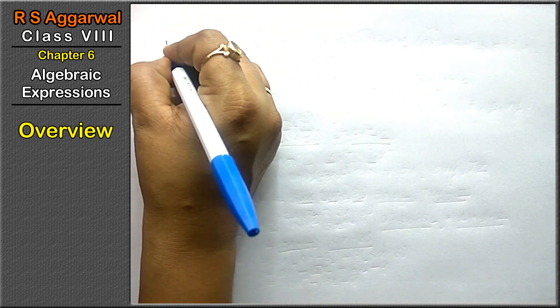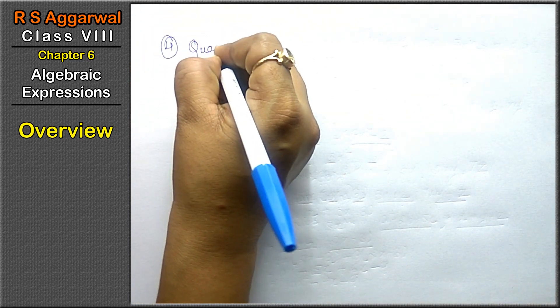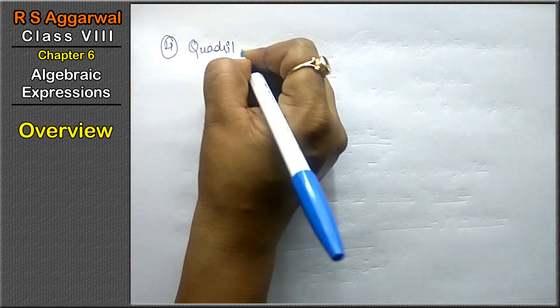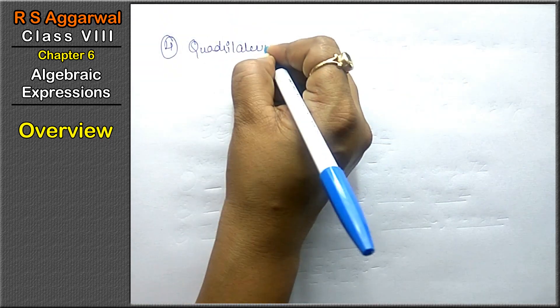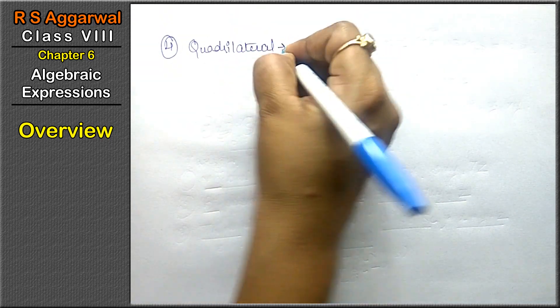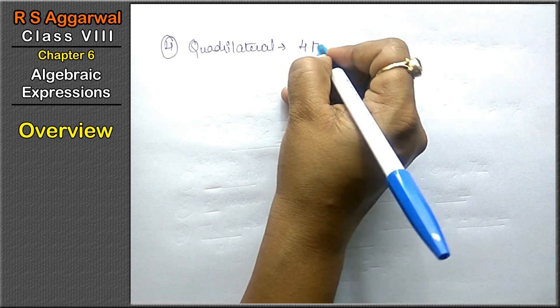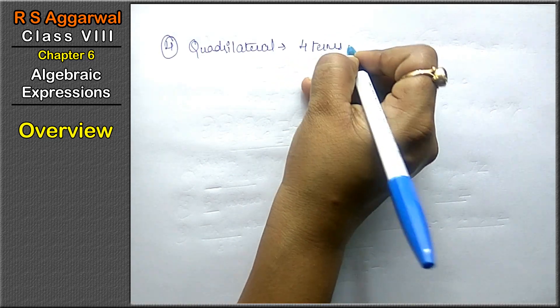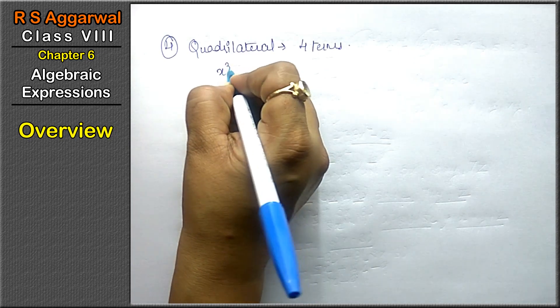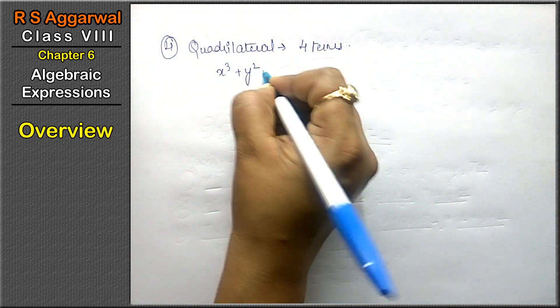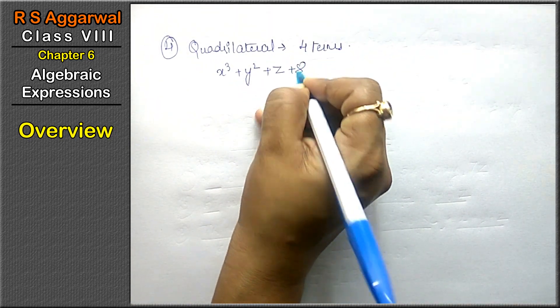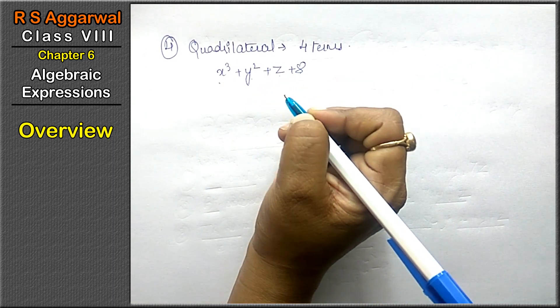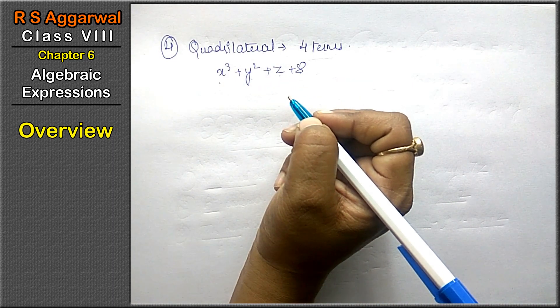Next is quadrilateral expressions. Quadrilateral has four sides, similarly quadrilateral expressions have four terms. For example, x³ + y² + z + 8. These are four terms. That means it is a quadrilateral expression.